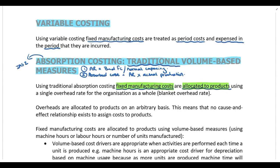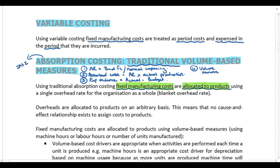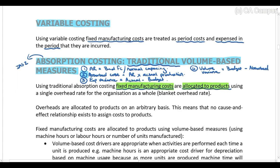At the end of the year we calculate variances. First, we calculate an expenditure variance, which is the difference between the actual cost and the budgeted cost. In addition to that, we also calculate a volume variance, which is the difference between the budgeted cost and the absorbed cost calculated in step two. That's our recap of variable and absorption costing.